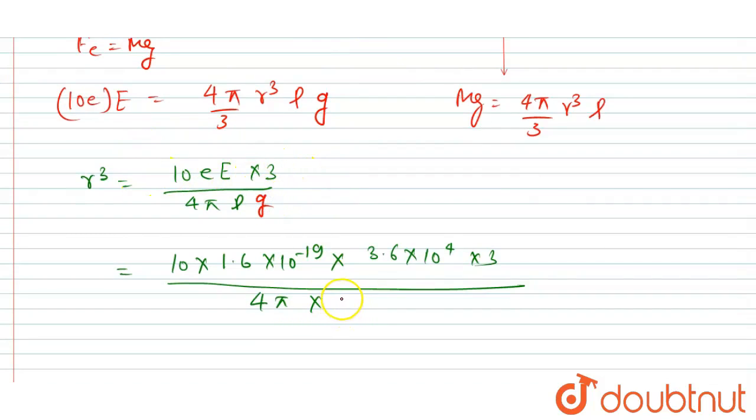So if you write the mass, you will write 4π/3 r³ into ρ into g is the weight, right? So if you put the value of ρ, ρ is already given in gram per centimeter cube, so I will write 1.26 × 10³ in kilogram per meter cube, and the g is 9.8.